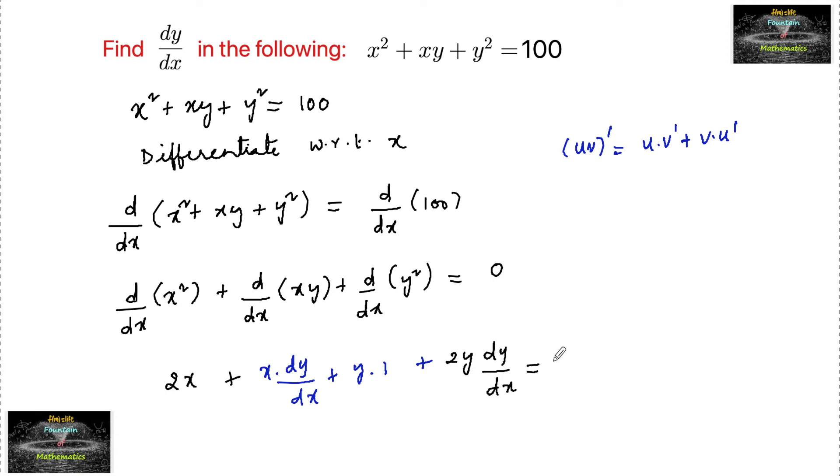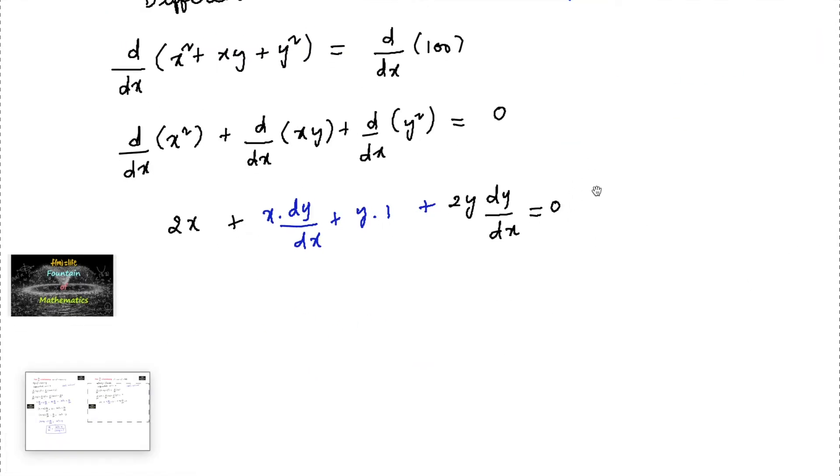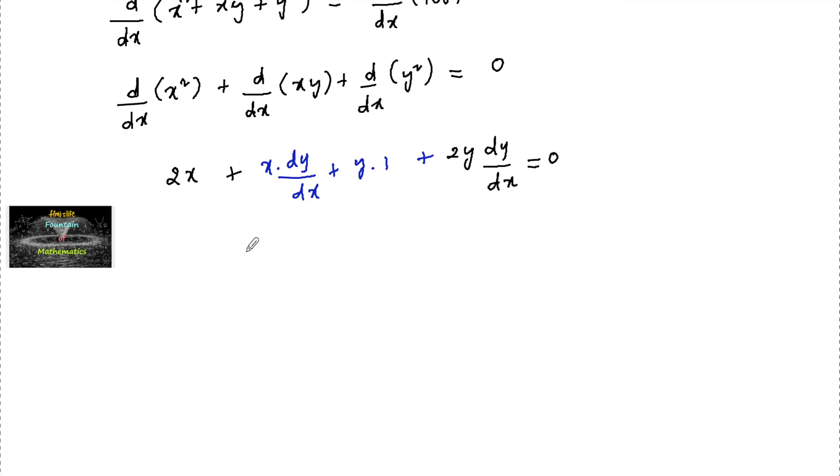equals zero. Let's take out dy/dx terms separately, so we have (x + 2y)·dy/dx equals -2x - y, or we can also write this